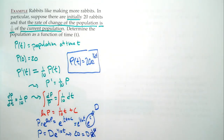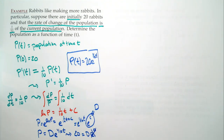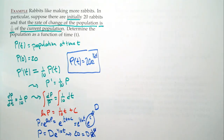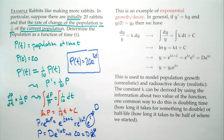Our final answer is p(t) = 20·e^((1/10)t). Is that realistic? Probably not — the exponential function gets big very quickly. If this were true, pretty soon we'd have rabbits covering the earth in a layer kilometers deep. Even if it's not realistic, it's a stepping stone to more realistic models, and it's sometimes better in the short term.